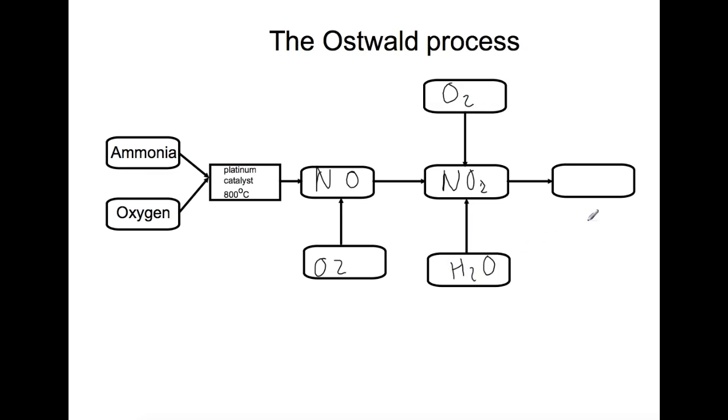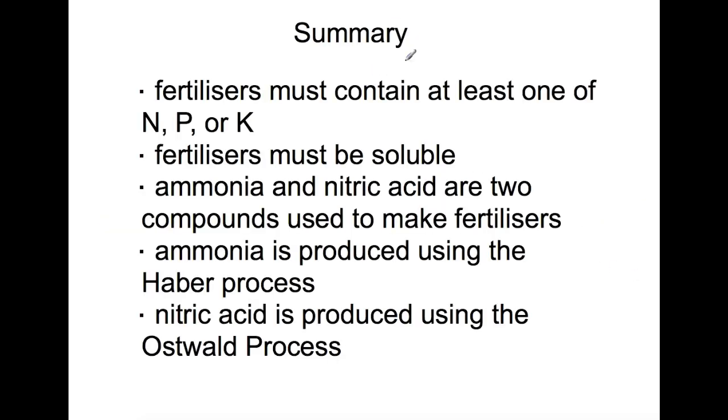So in summary, fertilizers must contain at least one of the three elements required: nitrogen, potassium, and phosphorus. Fertilizers must be soluble. Ammonia and nitric acid are two compounds that are often used to make fertilizers. Ammonia itself is produced using the Haber process, and nitric acid is produced using the Ostwald process. I hope that you found this video helpful. Please remember to subscribe and follow me on Twitter at Miss Adams Chem for regular updates on new videos. Bye for now.